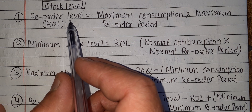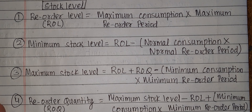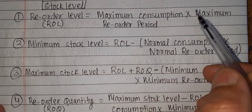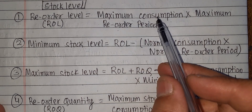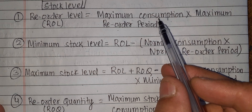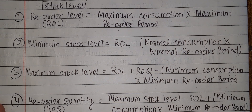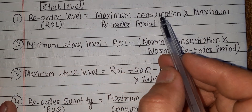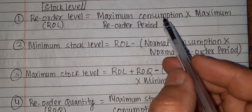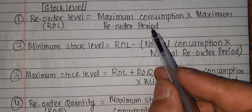What level do you order at? If you are in the store, you can read the reorder level. The formula is maximum consumption multiplied by the maximum reorder period — this is the maximum lead time. Maximum consumption means maximum requirement, or maximum usage. It is maximum consumption into maximum reorder period, where maximum reorder period depends on the maximum lead time.